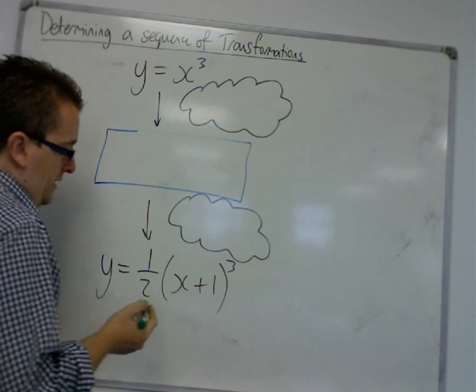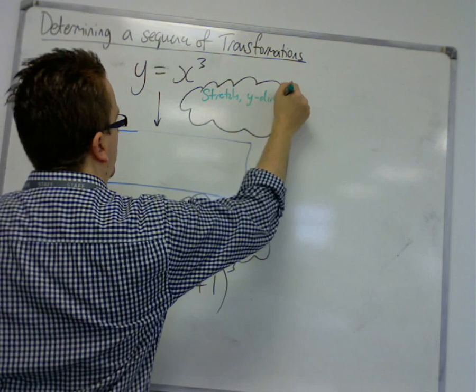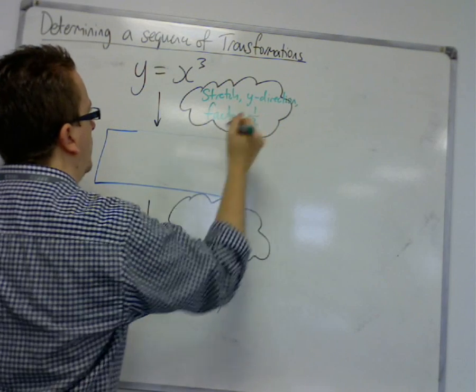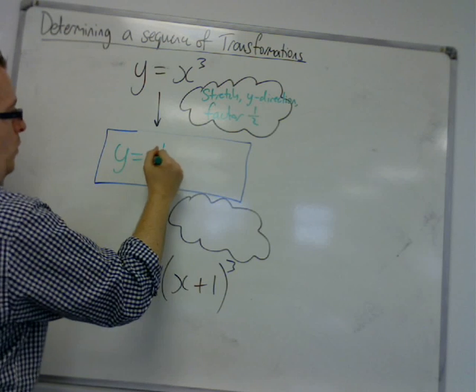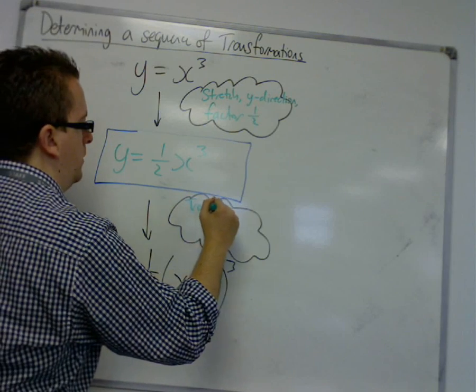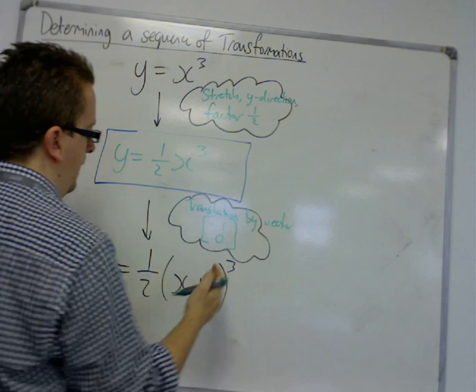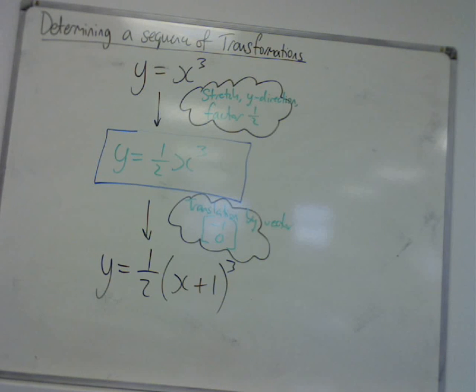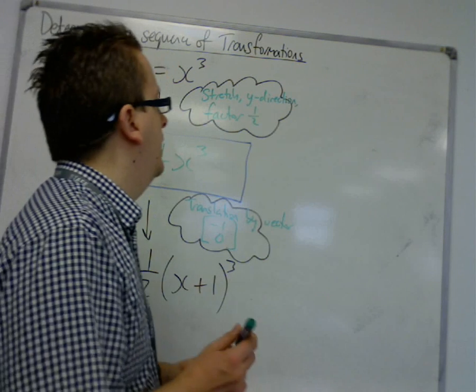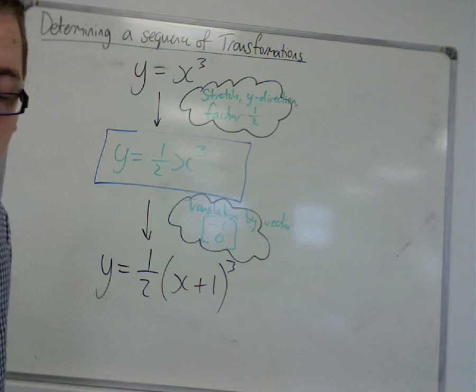So, if we do the stretch first. So, stretch y direction. Factor 1 half. Then we have y is equal to 1 half x cubed. And then, I have the translation by vector minus 1, 0. And that gets me to the final image. If you did it in the other order, in the opposite order, you would have got exactly the same thing. So, in this case, the order of transformations didn't matter. And it was just really identifying the sequence. Or identifying the two transformations that had occurred.